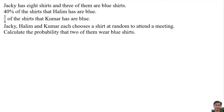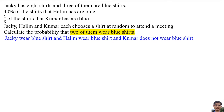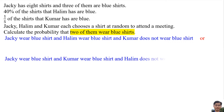2 of them wear blue shirts means: First possibility — Jackie wears a blue shirt AND Halim wears a blue shirt AND Kuma does not wear a blue shirt. Second possibility — Jackie wears a blue shirt AND Kuma wears a blue shirt AND Halim does not wear a blue shirt.